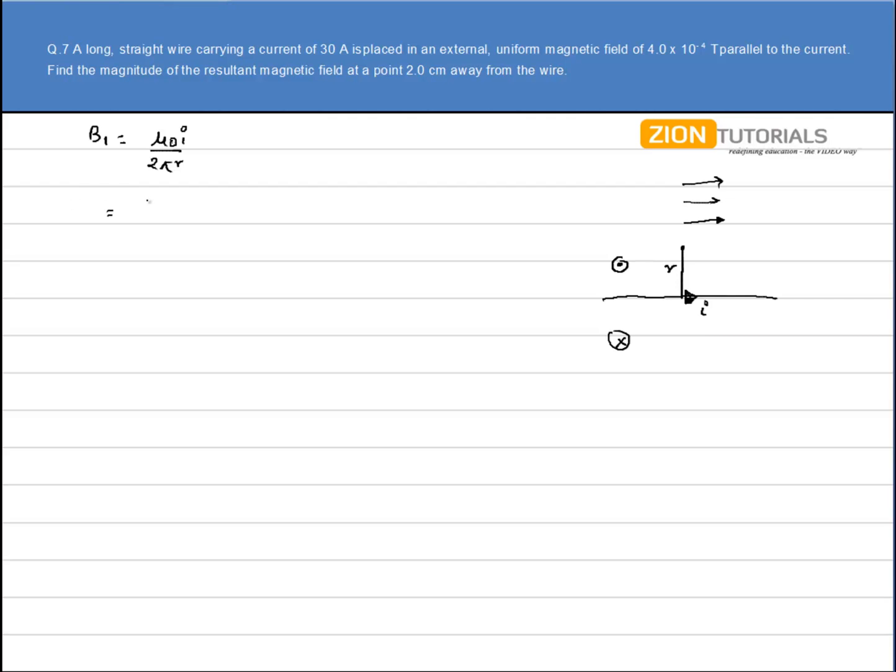Substituting the value I have magnetic field as μ₀ as 4π×10^-7. I that is current is 30 ampere divided by 2πr.